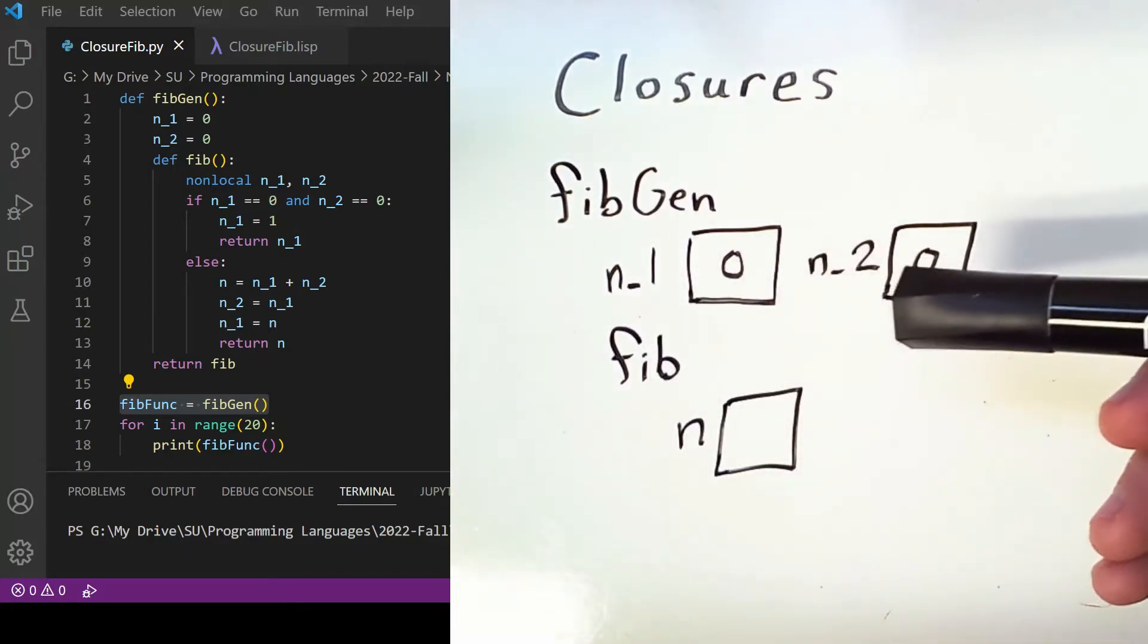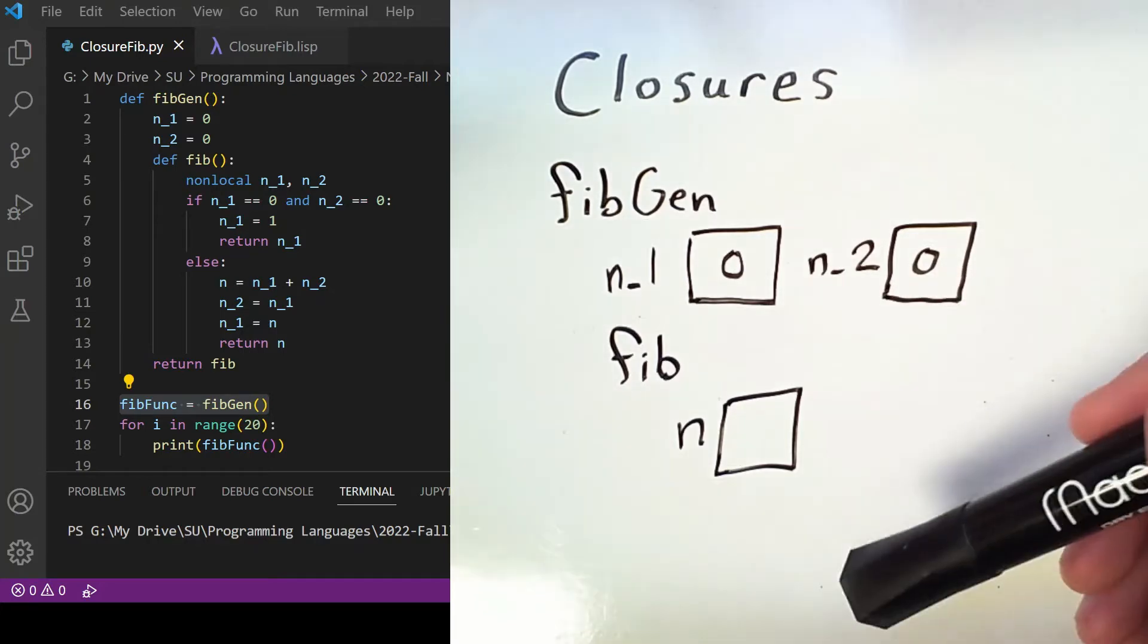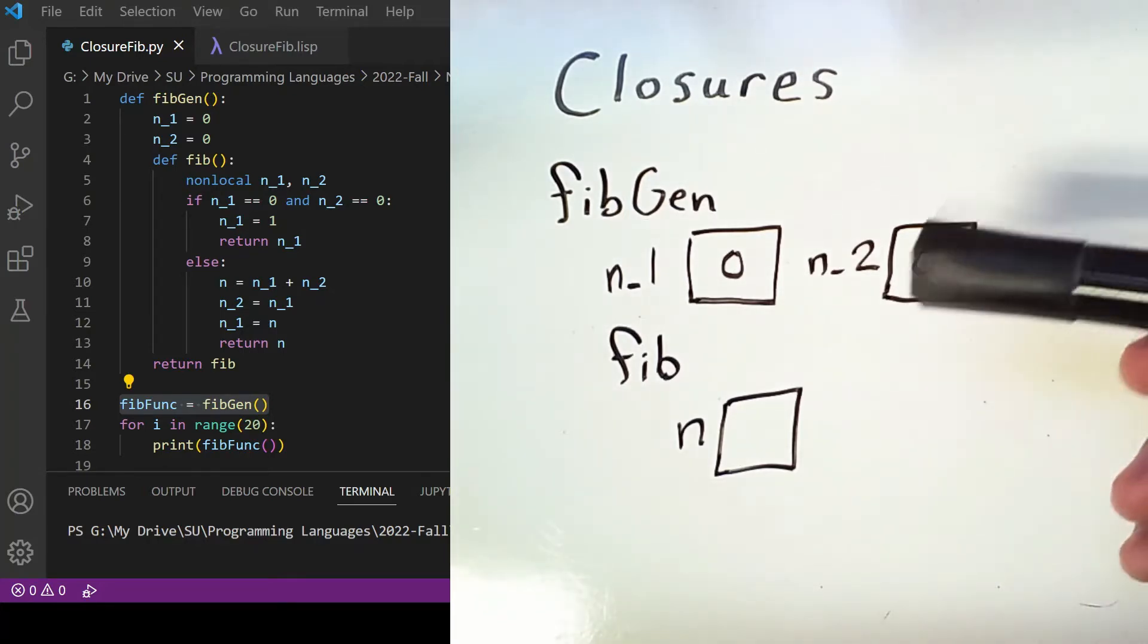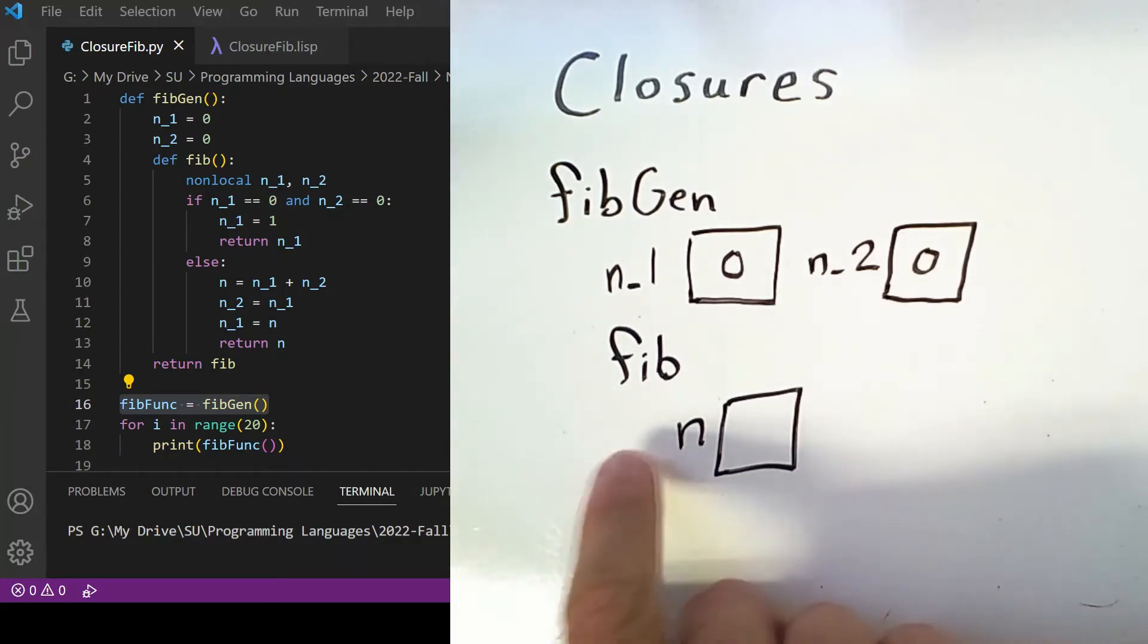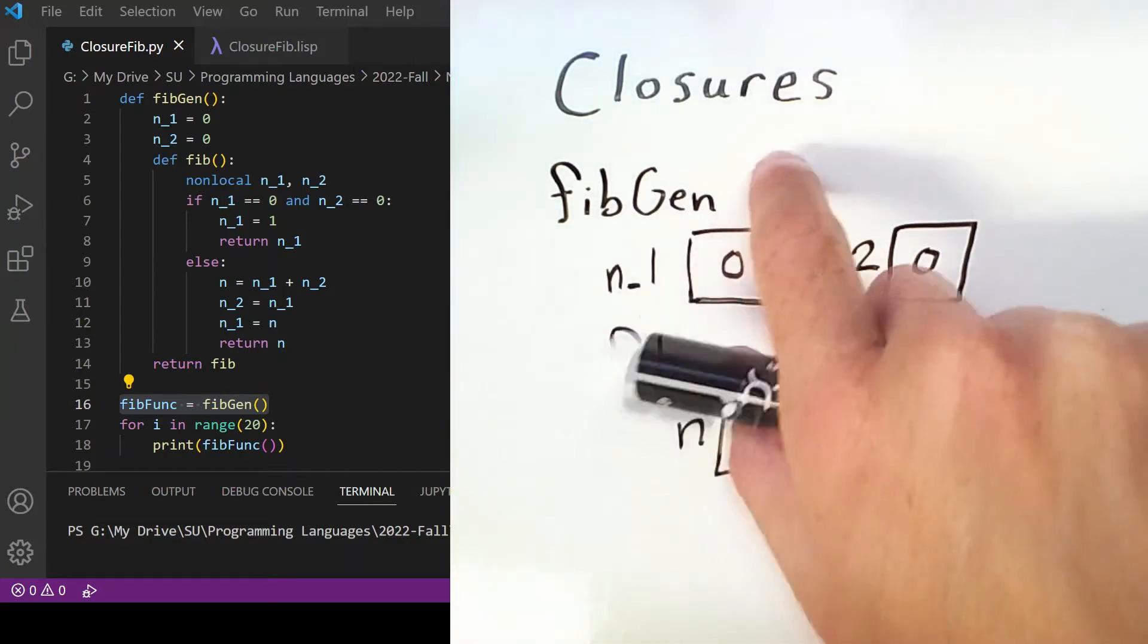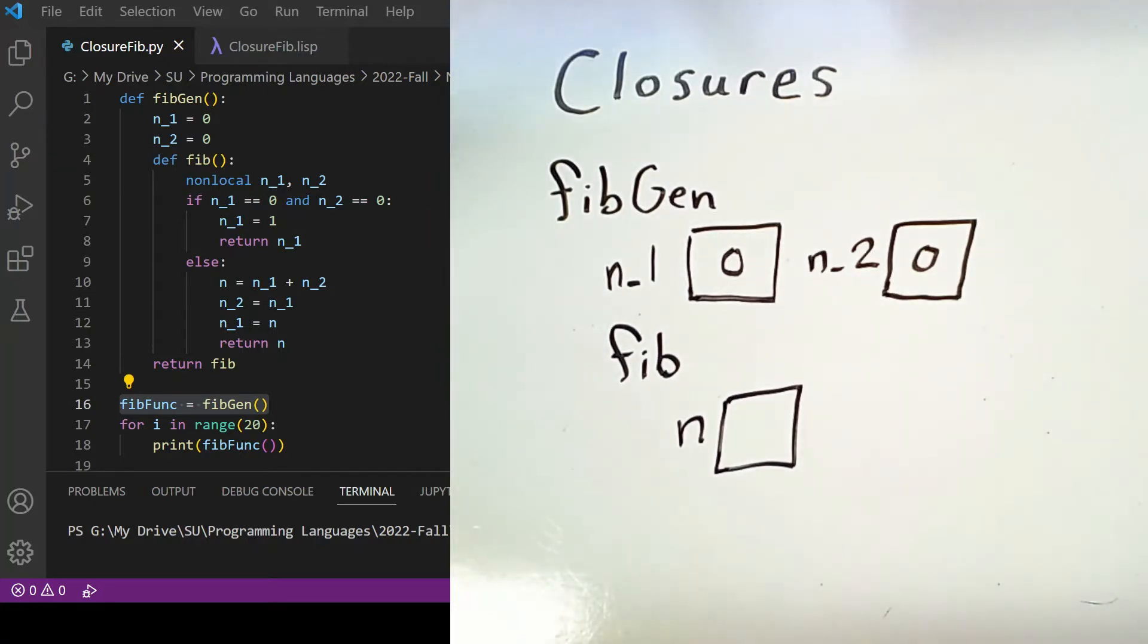However, we have a reference to a function that was defined inside of fibgen, so what happens when we call it? Well, let's look at the execution.